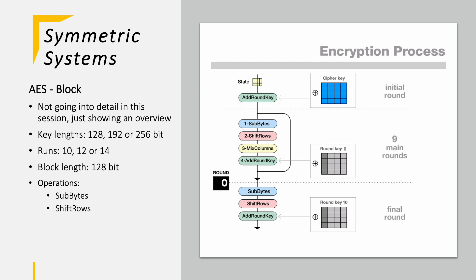Then we have shift rows where we shift the rows and we have mix columns where we scramble up the column and we have the add round key feature or operation function.